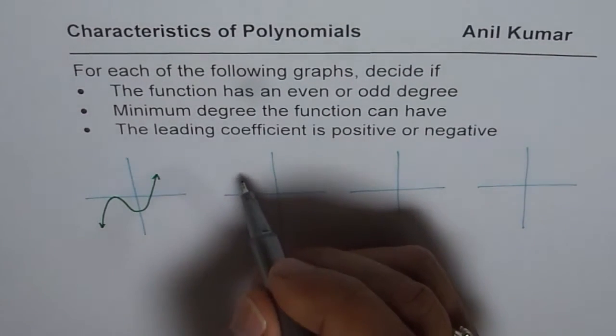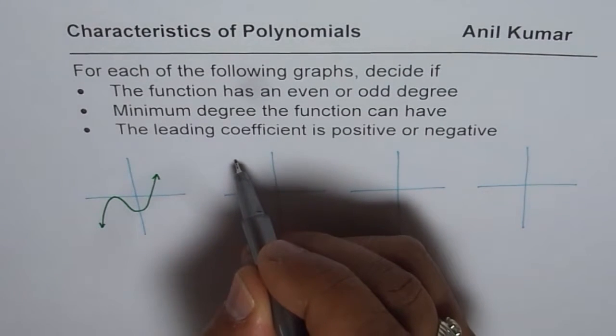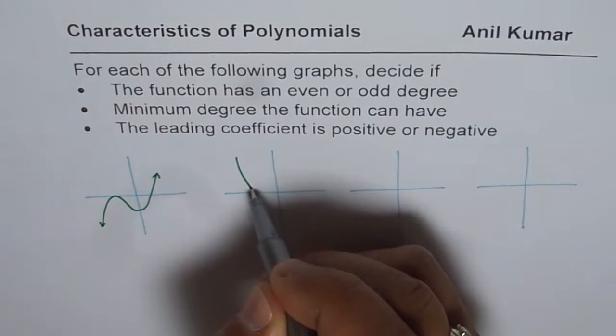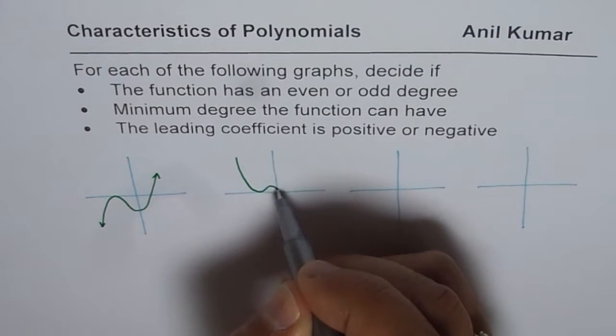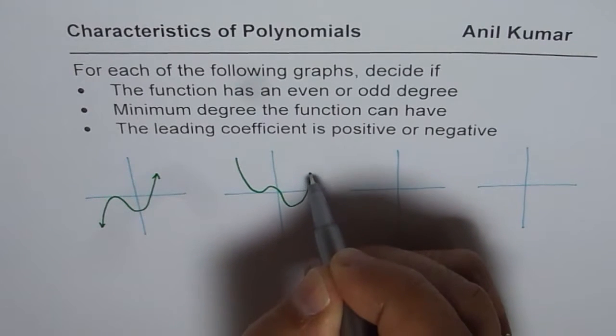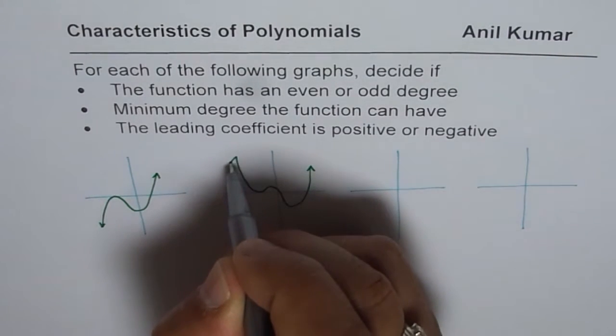And then this time let me start from the second quadrant. So, we have a function here which kind of is turning like this, and going like this. So, that becomes the second.